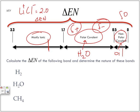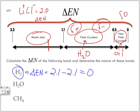Let's find the change in electronegativity for three examples. For hydrogen gas, H₂, because we're looking at hydrogen and hydrogen, we subtract the same values: 2.1 minus 2.1, which gives us a value of 0. So hydrogen gas is at 0, which means it is considered non-polar covalent.